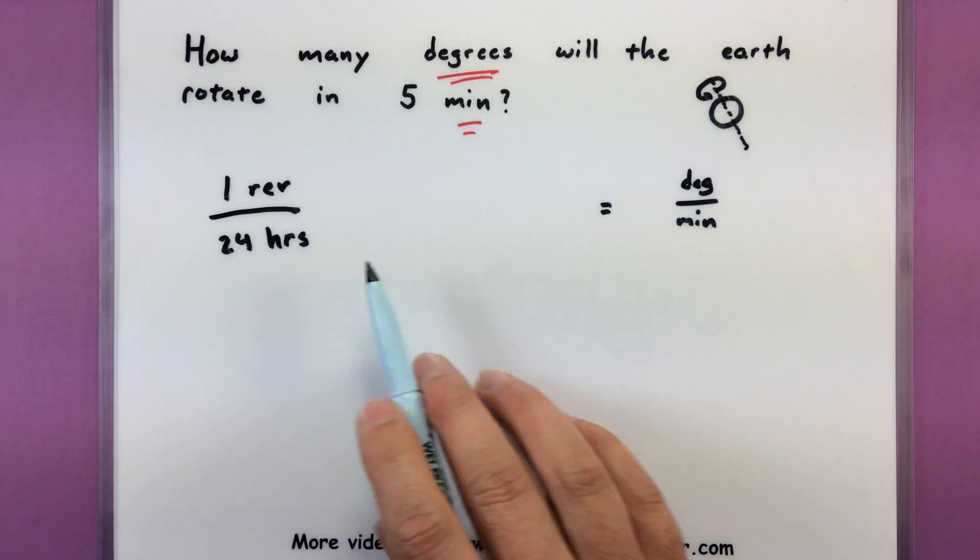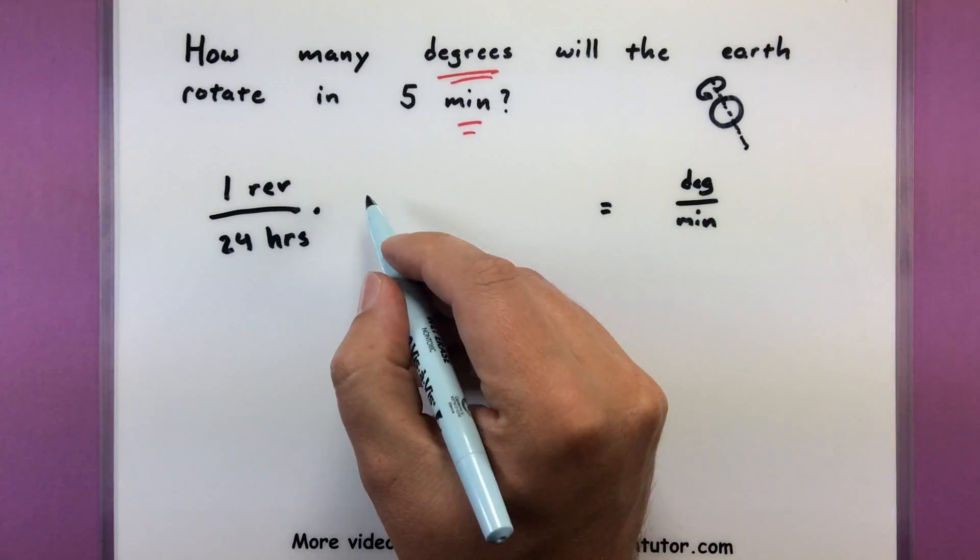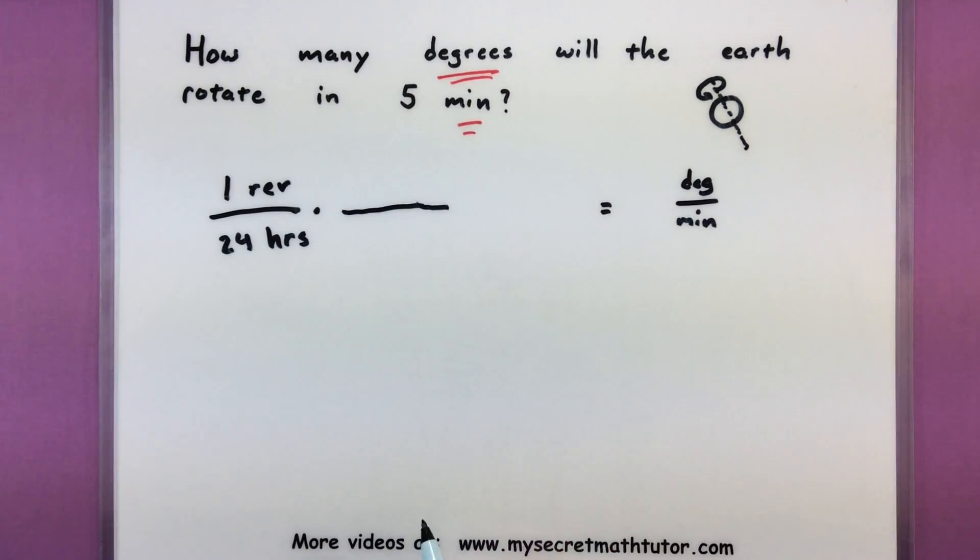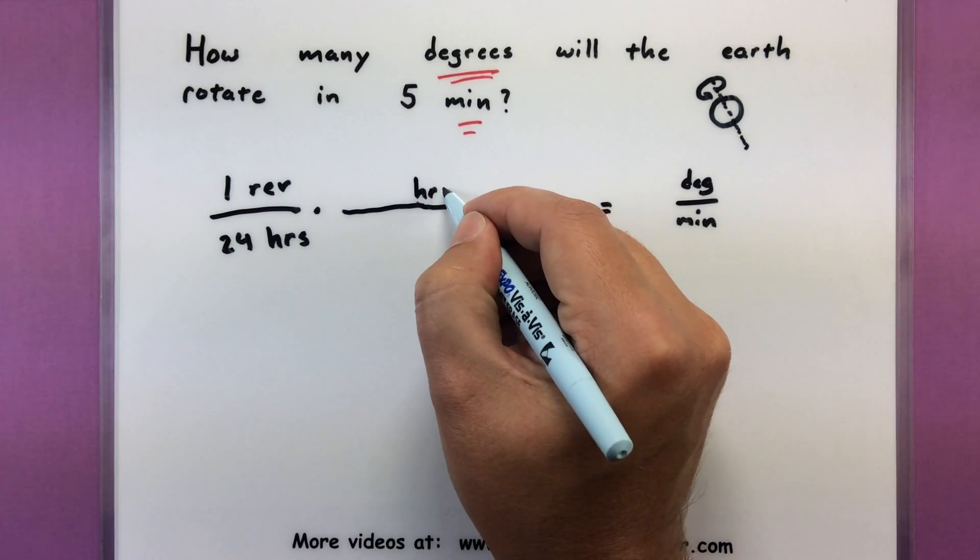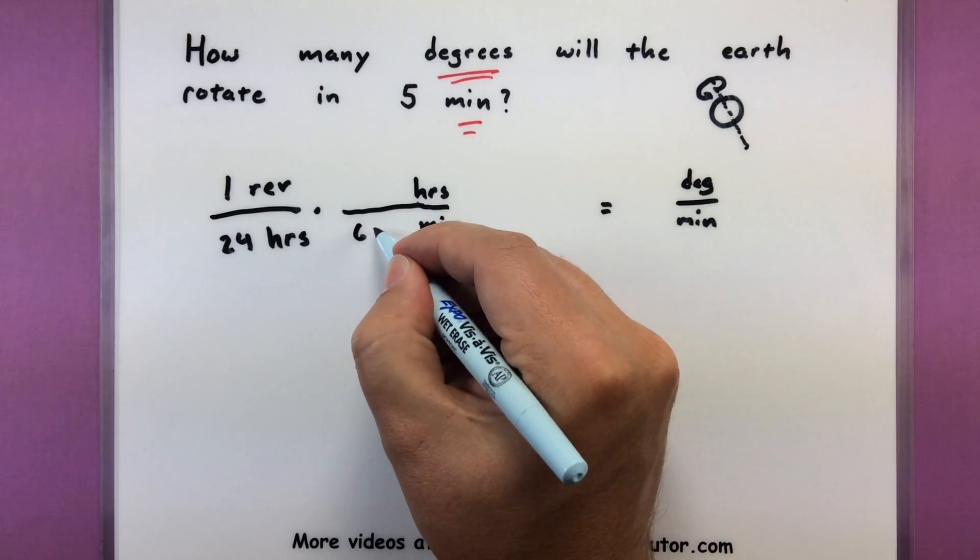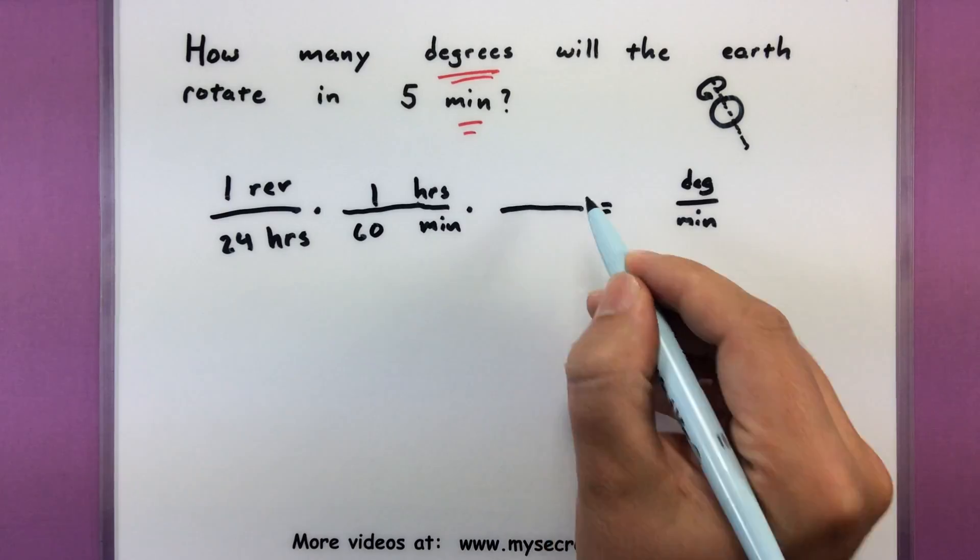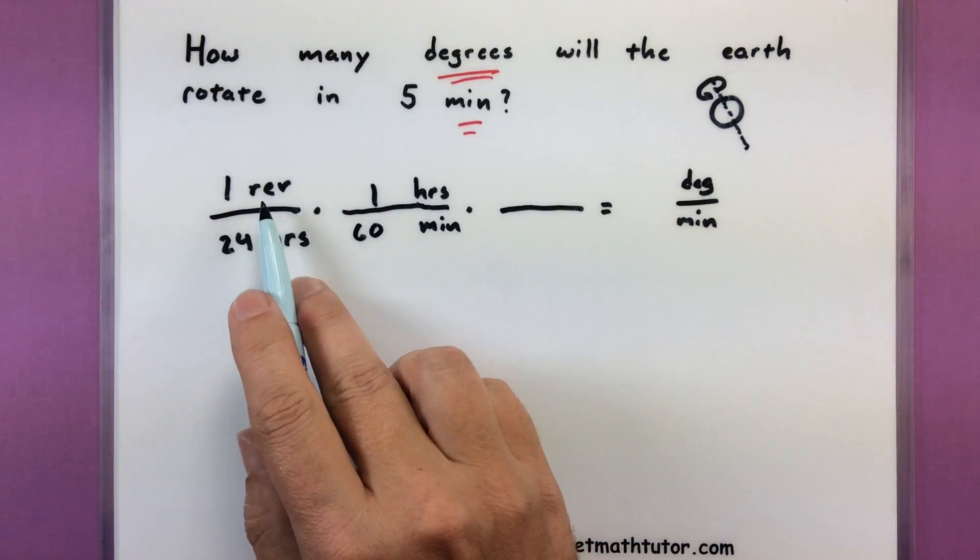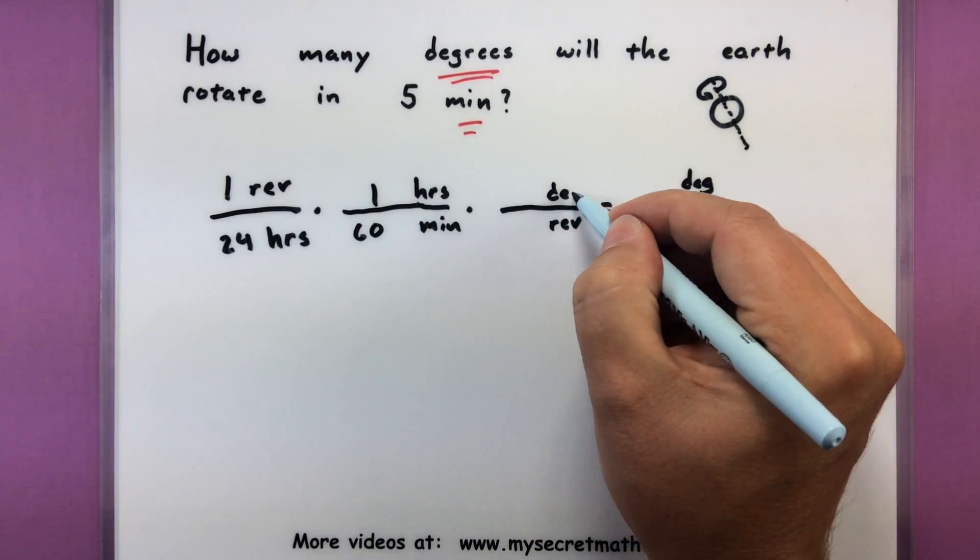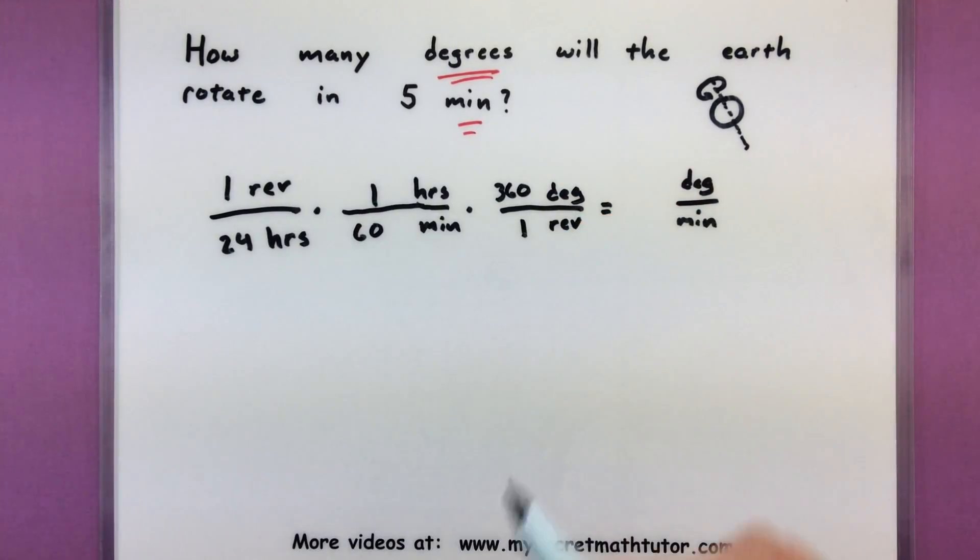Like before, I need to start doing some conversions. I need to turn hours into minutes and revolutions into degrees. So we'll use a couple of fractions, like we did last time, see how this works out. So first we need hours into minutes. So to get rid of hours, we'll put hours on top, minutes on the bottom. There are 60 minutes in one hour. Nice. On to the second fraction. This will help us convert revolutions into degrees. So let's put the revolutions on the bottom, degrees on top. Now we'll get those two guys to cancel out. Looks good. I have 360 degrees in one revolution.